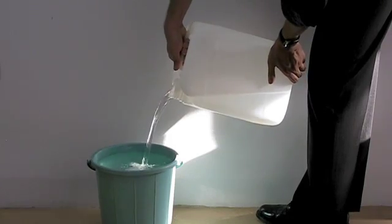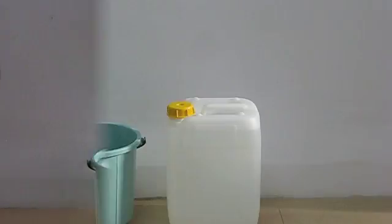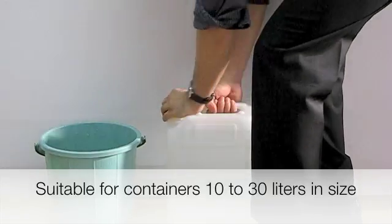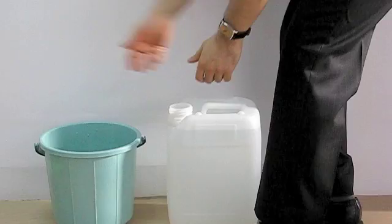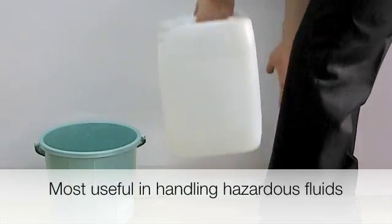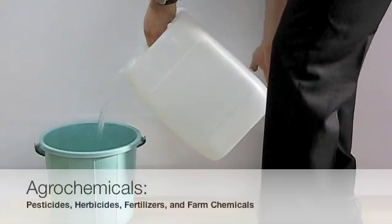Let's try pouring one more time. The no-glug system is most suitable for containers 10 to 30 liters in size, and the feature was invented primarily to handle hazardous fluids like agrochemicals including pesticides,